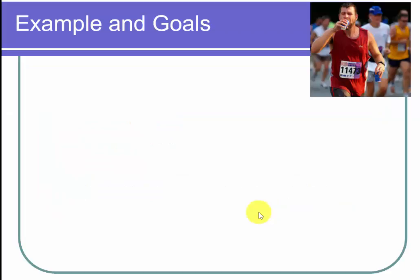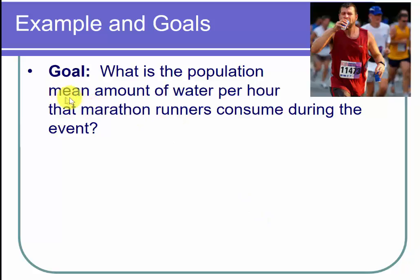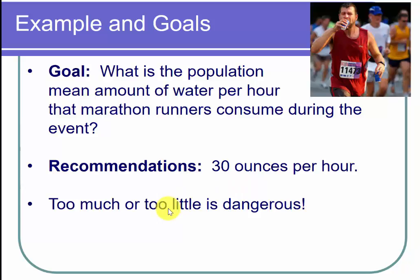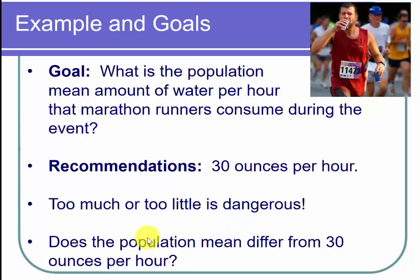Let's start with an example. We want to find out the population mean amount of water per hour that marathon runners consume during the event. We can't get the exact population mean, but we can get a confidence interval for it. The recommendation is 30 ounces per hour. If a marathon runner drinks too much water, they get over-hydrated, which is dangerous. If they drink too little, they get dehydrated, which is also dangerous. We might also ask: does the population mean differ from the recommended 30 ounces per hour? That will be a hypothesis test.